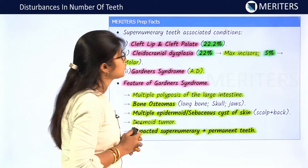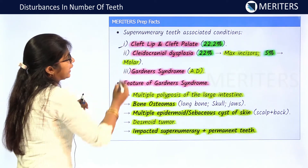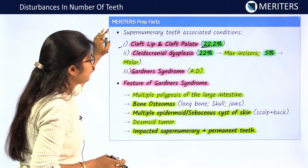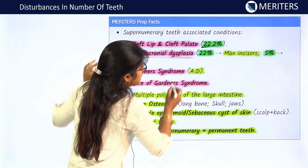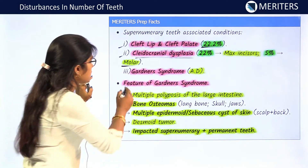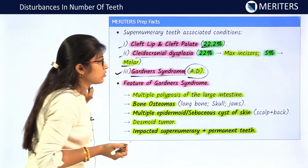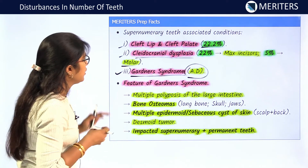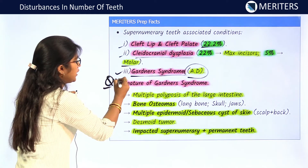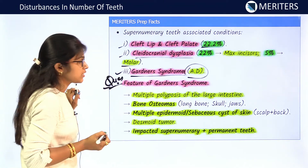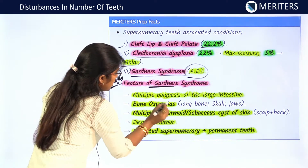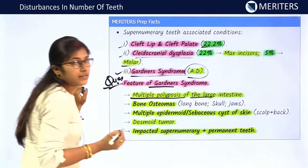Conditions associated with supernumerary teeth: cleft lip and cleft palate — 22.2 percent; cleidocranial dysplasia — 22 percent, associated with maxillary incisors, and 5 percent for molars. Gardner's syndrome has autosomal dominant inheritance. Gardner's syndrome is a very important MCQ topic — anything can be asked about it.